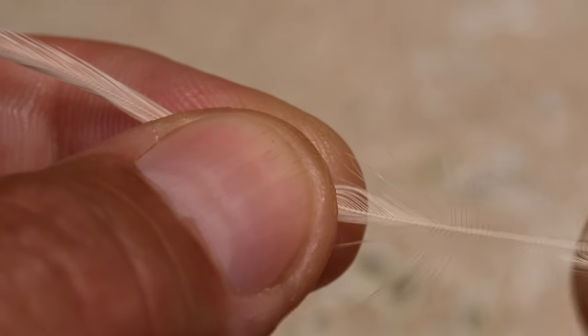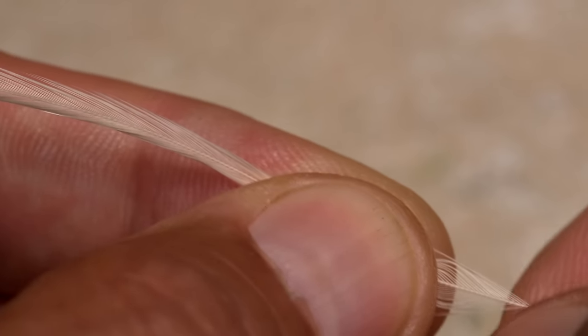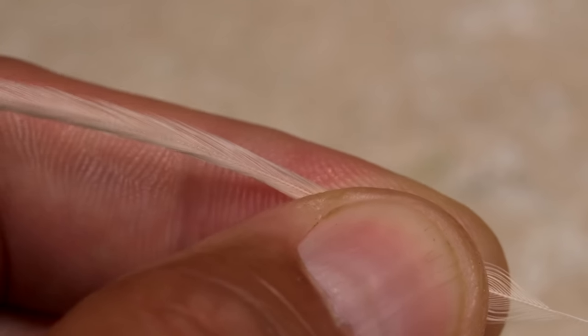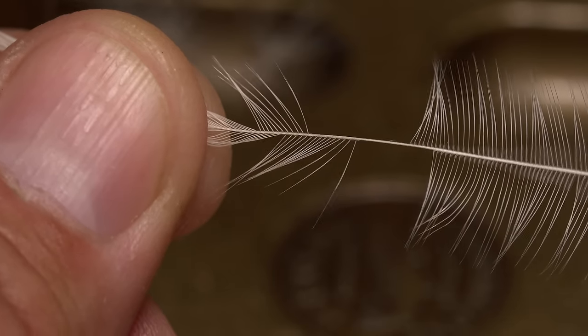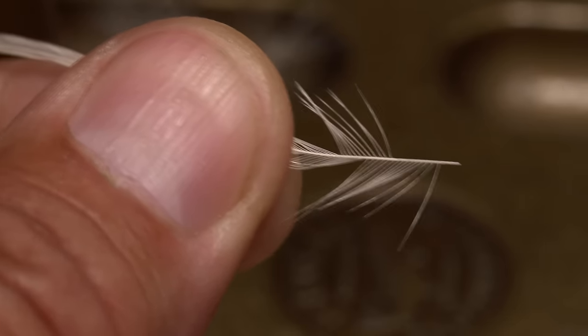Prepare the feather for tie-in by holding it with the shiny side facing you and stripping the lower webby fibers free from the stem. Then remove a few extra fibers from the top edge of the stem. You can then snip the excess butt end off, leaving a small amount of space for tie-in.